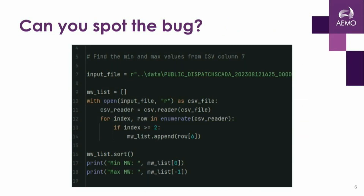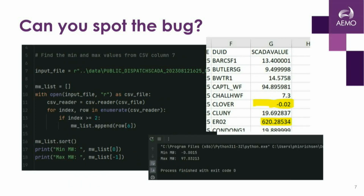Back to our code. It opens the file, iterates it, pulls out column six, adds it to a list, sorts it, and prints out what we think is going to be the first and last value — the minimum and maximum megawatts. And we get minus 0.0015 and 97. The answer's wrong. This is perhaps the worst sort of bug you can get because it executes, it produces a number, but the number is absolute nonsense.